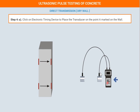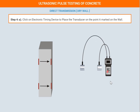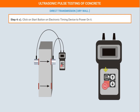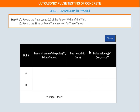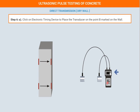Next, we measure the time by clicking the timing device to place the transducer on point A marked on the wall. Click the enter button and the value is displayed. Click the show button and the results appear: time is 107.3 μs, path length is 0.302 m, and the velocity — which is distance divided by time — is 2.82 km/s. Click the arrow button to proceed to point B.